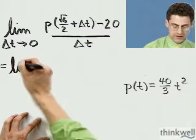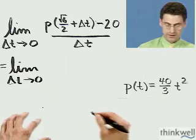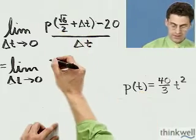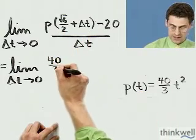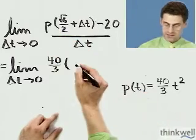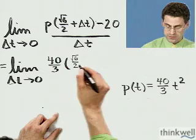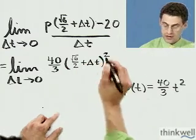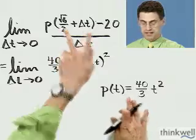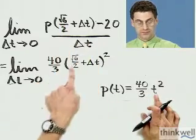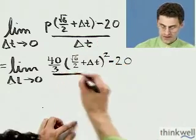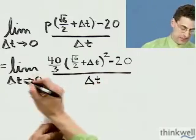This is going to get a little long in terms of writing, so don't fret. What do I do with this quantity? I plug in for t that value, so I see 40 over 3 times — and instead of t squared I'm going to plug in the square root of 6 over 2 plus Delta T, and I've got to square all that. Wherever I saw the t I plugged in this whole thing. Now I've got to write everything else: minus 20, divided by Delta T.